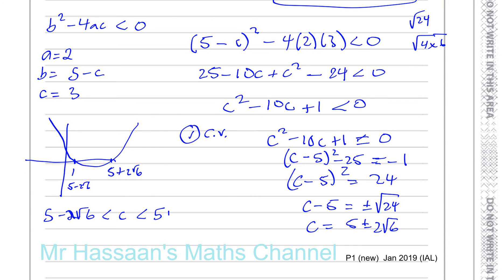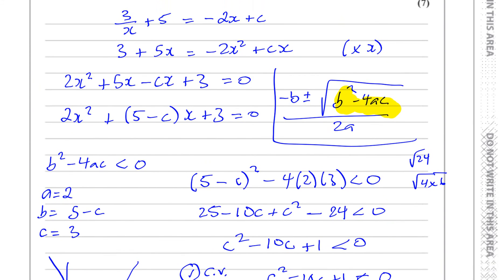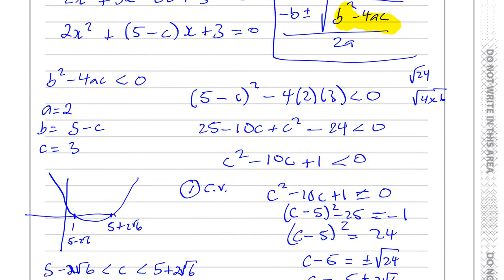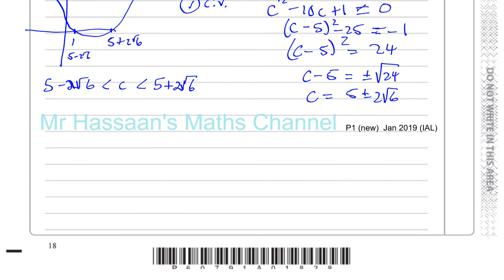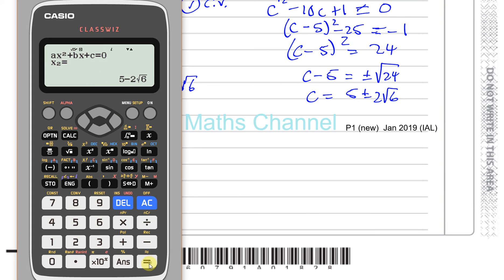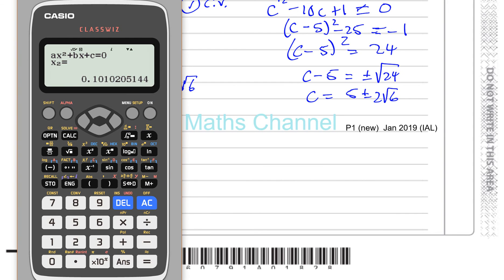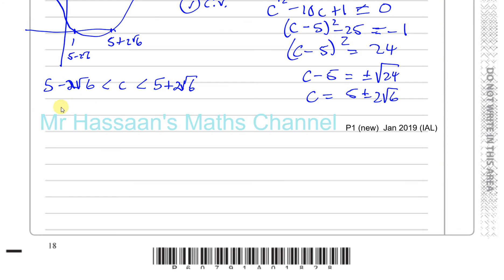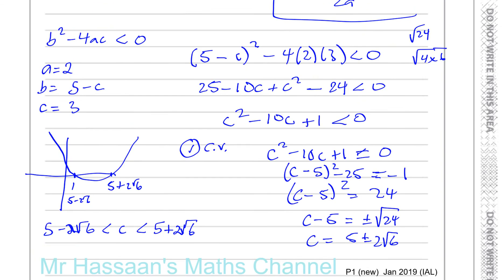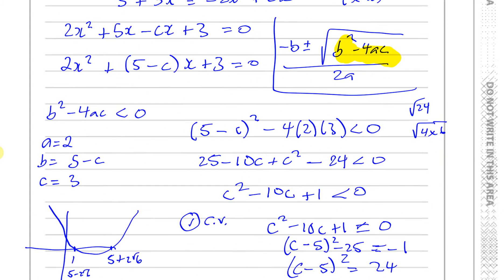That's when you'll have no solution to this equation. It says find the range of possible values of c, so you could leave the answer in this exact form, or in decimal form as approximately 0.10 to 9.90. But if it doesn't state anything, it's fine to leave it in exact form — in fact, I think that's better. So there we have question number 9 answered.